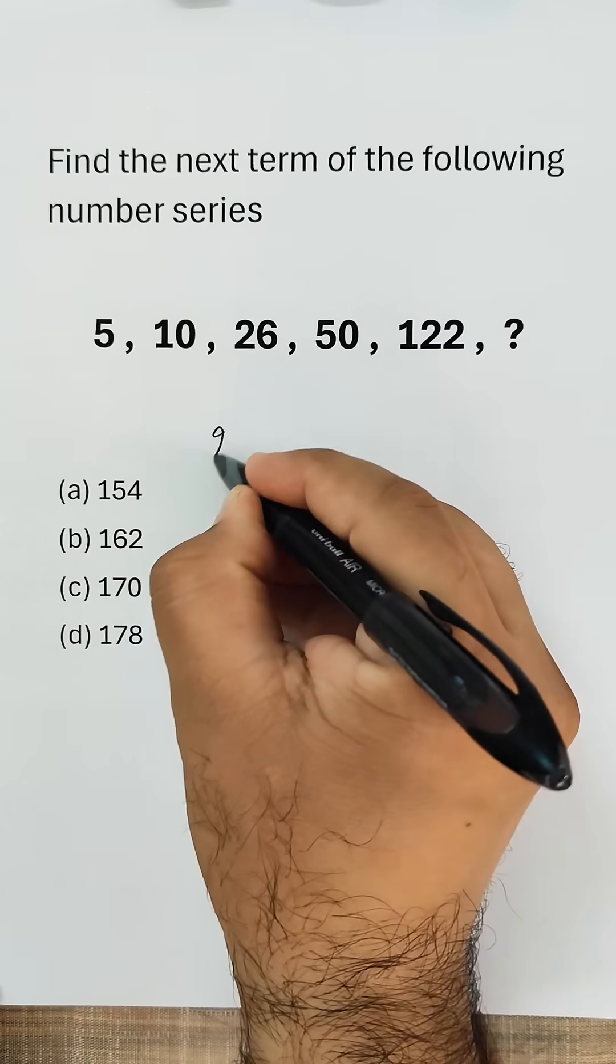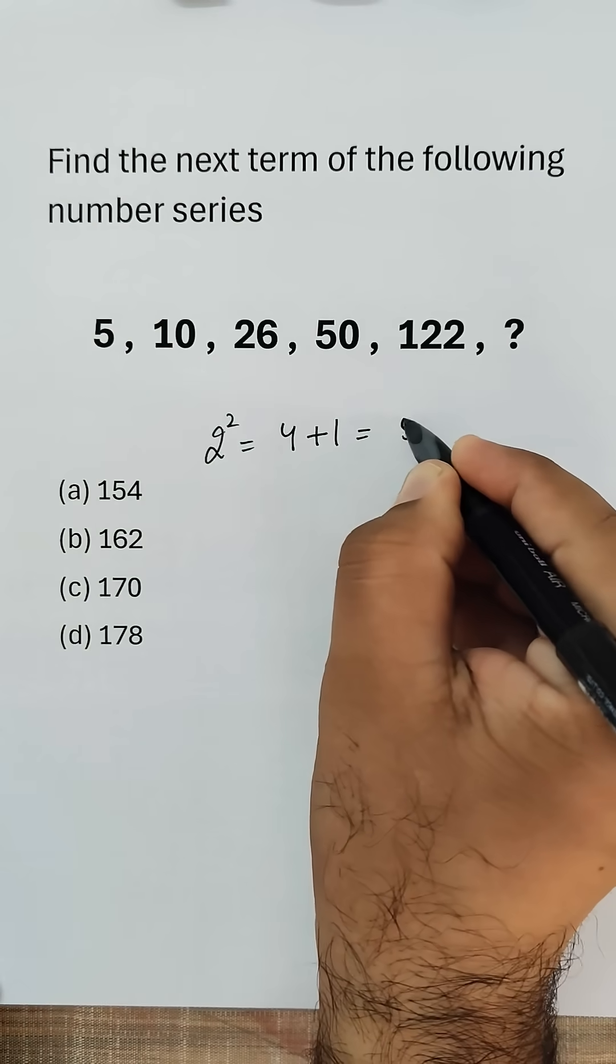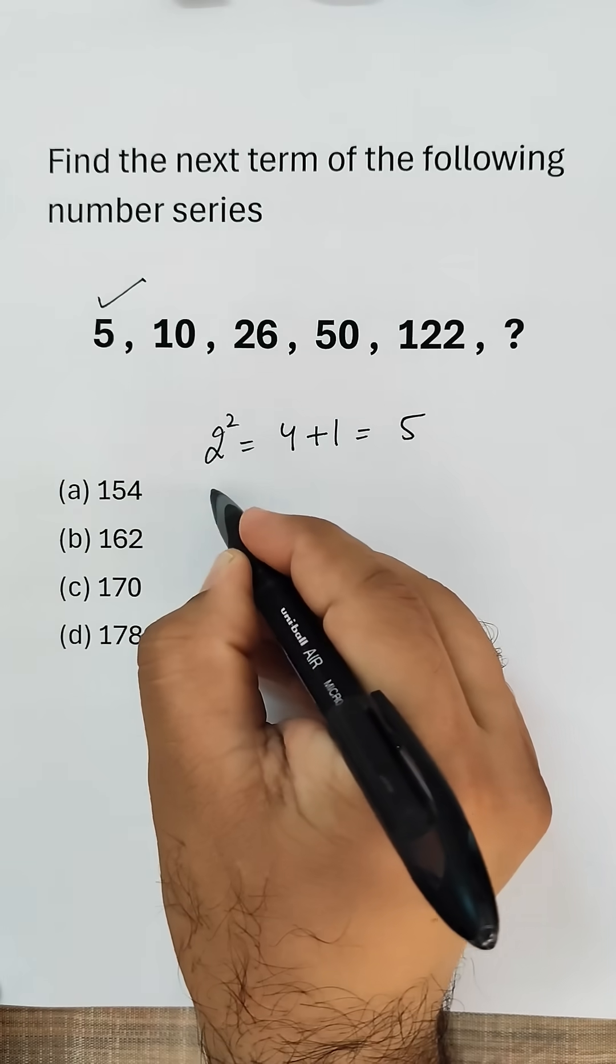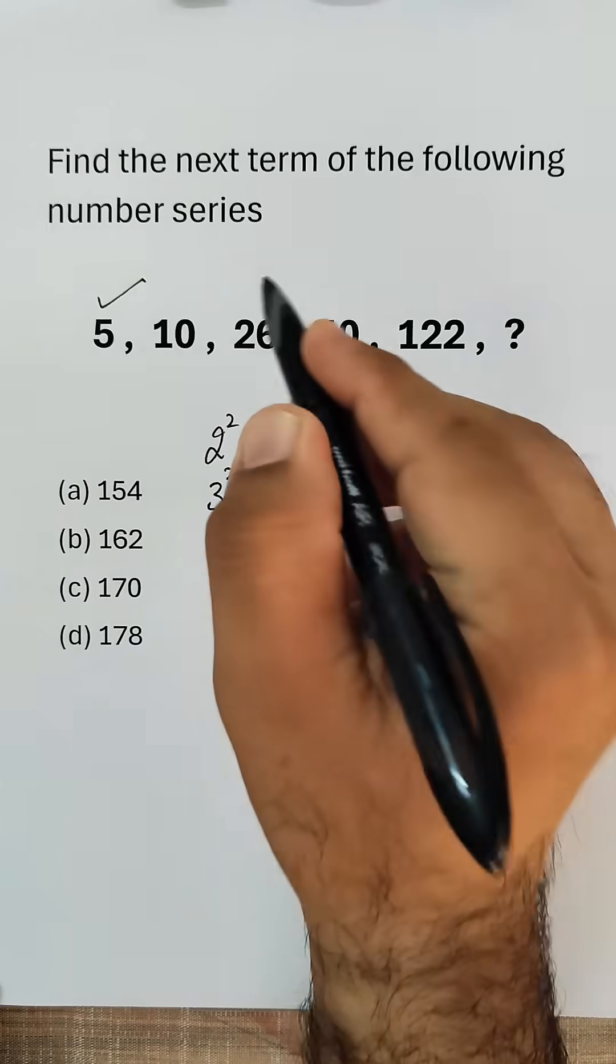Now we will start with 5. 2 squared is 4, if we add 1 we get 5. Similarly, 3 squared is 9, if we add 1 we get 10.